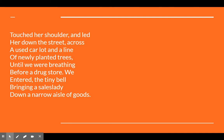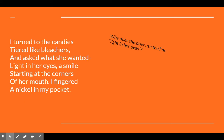I touched her shoulder and led her down the street across a used car lot and a line of newly planted trees until we were breathing before a drugstore. We entered, the tiny bell bringing a sales lady down a narrow aisle of goods. I turned to the candies, tiered like bleachers and asked what she wanted. Light in her eyes, a smile starting at the corners of her mouth. I fingered a nickel in my pocket. Why does the poet use the line 'light in her eyes'? Think about the comparison of cold, dreary days and what's happening in their young lives.